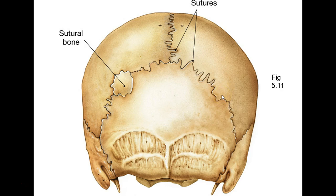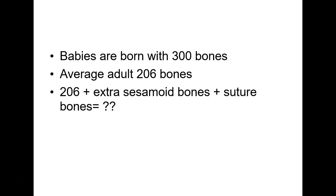We're going to pick up where we left off. So we went through the six different shapes of bone — you could give me seven if you include pneumatized bone. The average adult has 206 bones. Sometimes you can have little extra sesamoid bones, sutural bones, or sometimes even a big irregular bone. I've actually seen an x-ray of an L6 vertebra — a whole extra lumbar vertebra.